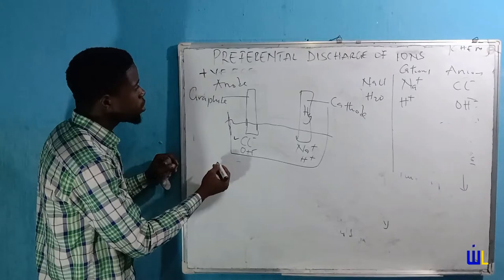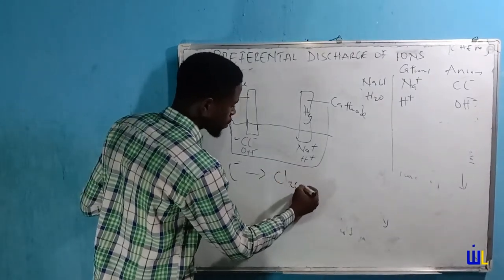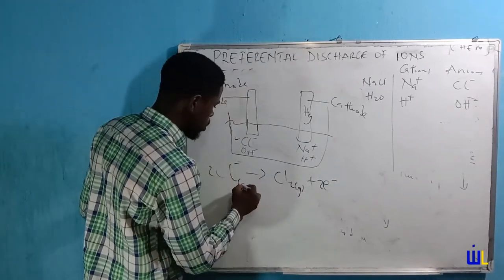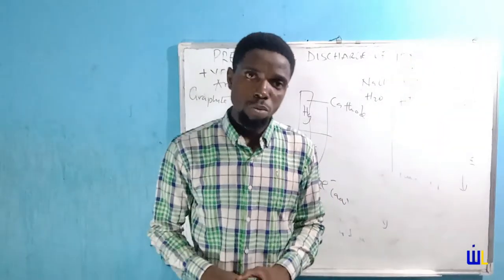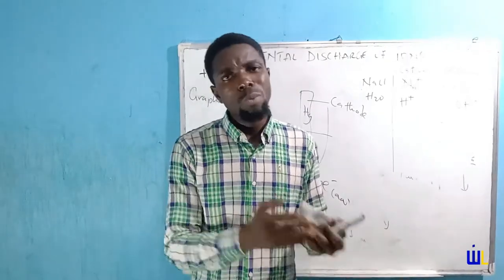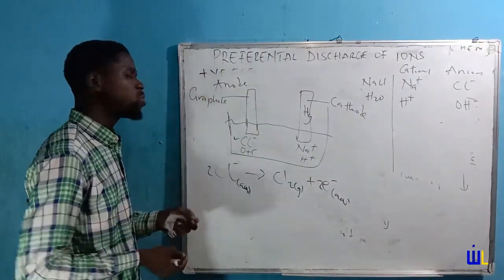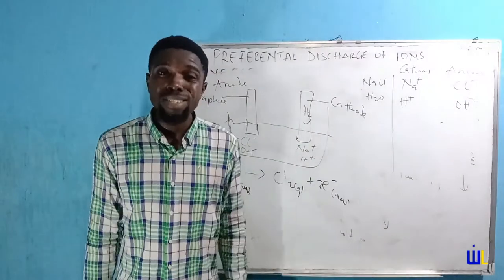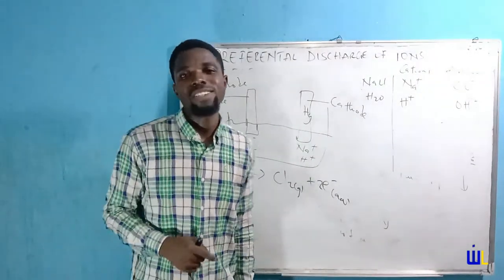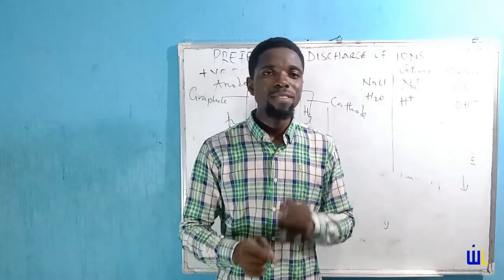At the cathode, mercury is used and we have sodium and hydrogen competing. Since mercury has a special affinity for sodium, sodium is preferentially discharged — case closed. I hope you've learned something about preferential discharge of ions. Thank you very much for watching this video. Remember, this is Witsland, learning made easy.